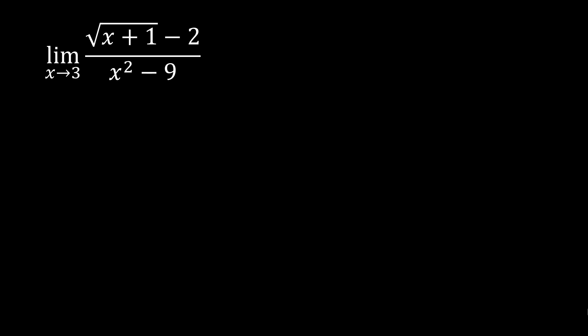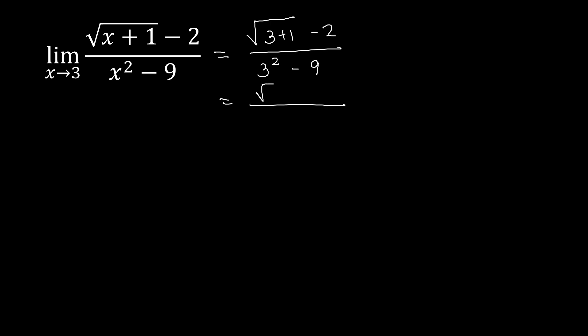The next example: the limit of the square root of x plus 1, minus 2, over x squared minus 9, as x approaches 3. Let's try direct substitution. We get the square root of 3 plus 1, minus 2, over 3 squared minus 9. Simplifying: the square root of 4 is 2, minus 2 is 0, over 9 minus 9 is 0. So we get 0 over 0 — that is indeterminate. We will need to manipulate the function.